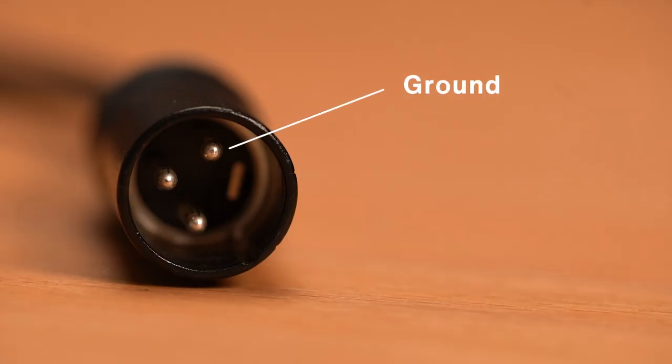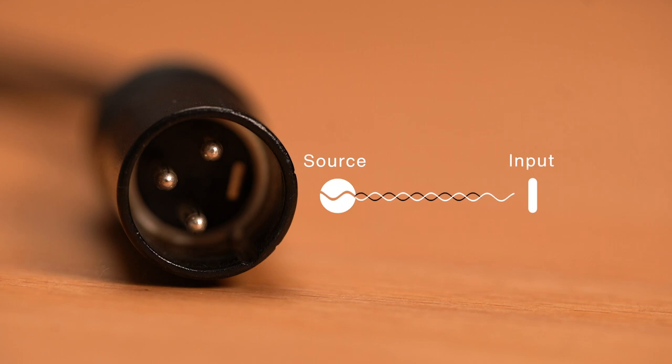An XLR cable is a so-called balanced cable. A balanced cable has three wires and contact points. Pin 1 is the ground wire, and pin 2 and 3 are for the signal. 2 and 3 both carry a copy of the signal, but with reversed polarity. Why? Now here comes the cool thing. What happens when you sum two signals with reversed polarity? The signals are cancelled out. And just like if you would combine plus 1 and minus 1, it would equal 0.